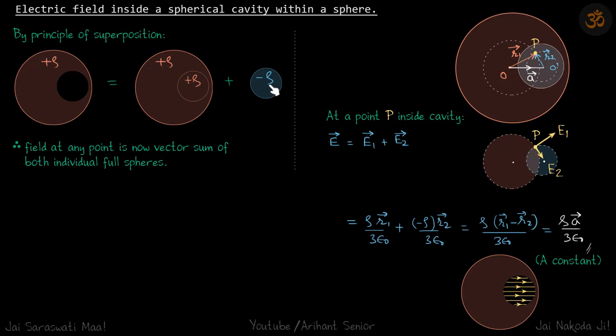Therefore field at any point now is the vector sum of both individual full spheres. He is asking inside cavity, but at any point in the space everywhere you can find electric field by just doing the vector sum of each individual sphere.